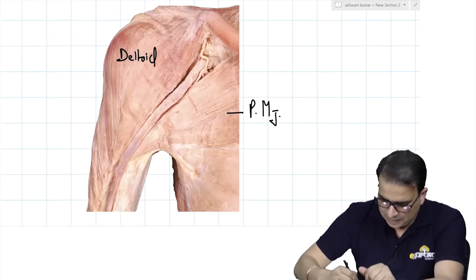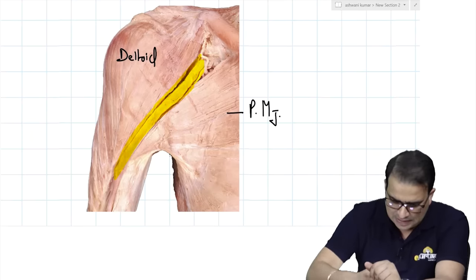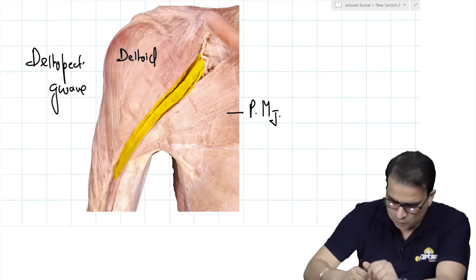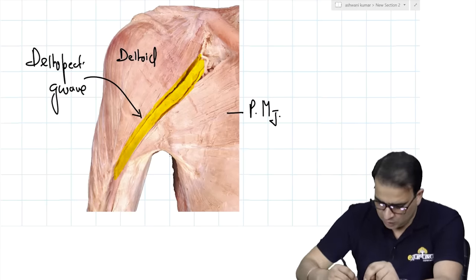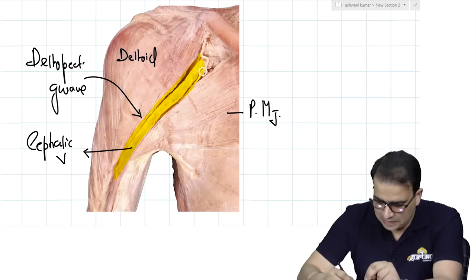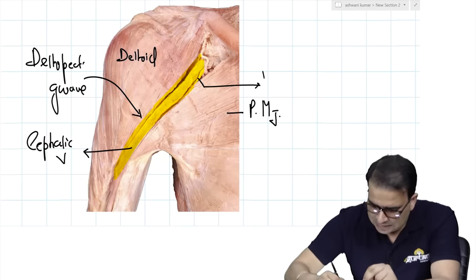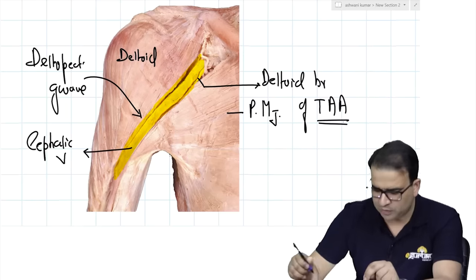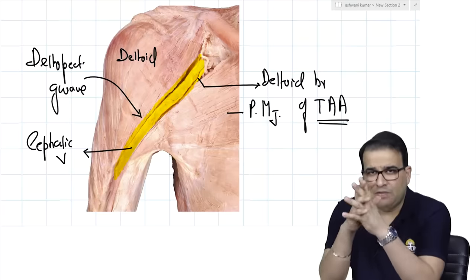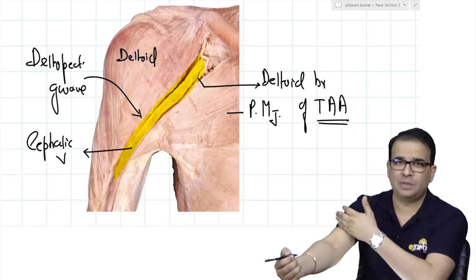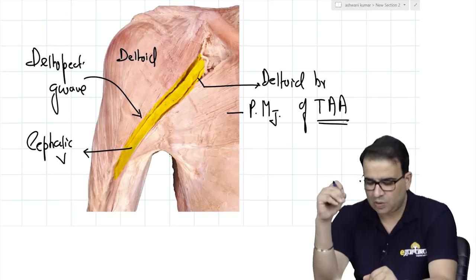The space between the anterior fiber of the deltoid and the pectoralis major is called the deltopectoral groove. This groove has two major contents: one is the cephalic vein, clearly visible, and the other is the deltoid branch of the thoracoacromial artery. So the deltoid muscle, the pectoralis major, and the groove in between is the deltopectoral groove, with the cephalic vein on the lateral side and the deltoid branch of the thoracoacromial artery.